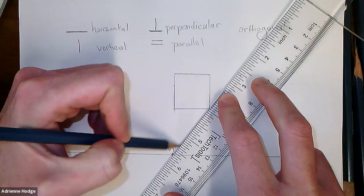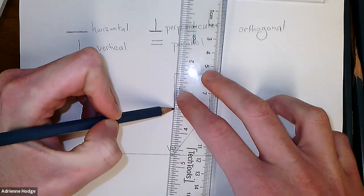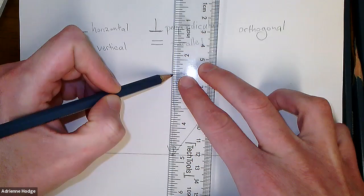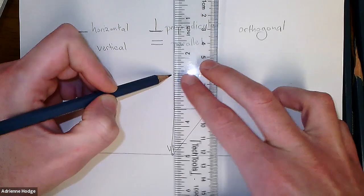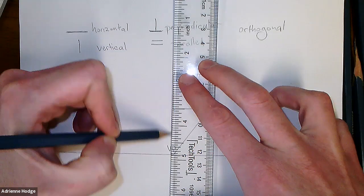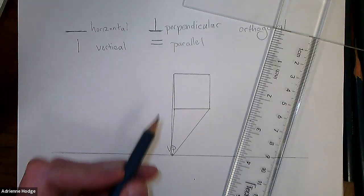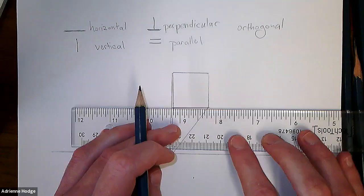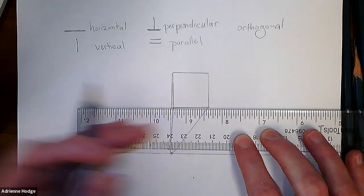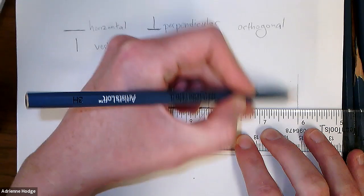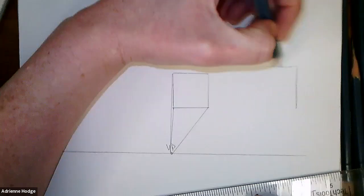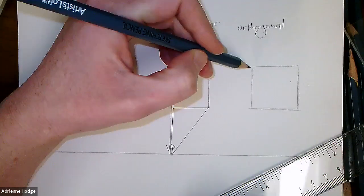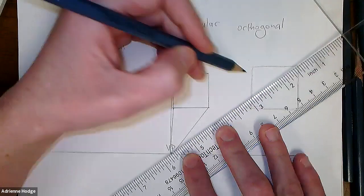Now we're going to line up the corners of our box and draw a line — tracing with our straight edge or ruler to the vanishing point from all of the corners of the box. These are our orthogonal lines. Make sure if you bump the ruler it stays lined up, otherwise it won't be traced accurately from the vanishing point.